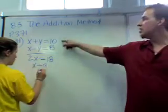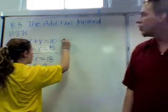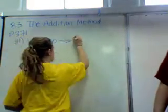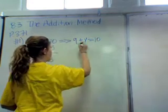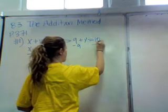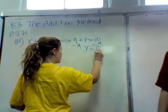Take x equals 9 and put it back in here, and we'll get 9 plus y equals 10. Subtract 9 on both sides. You'll get y equals 1, and you've got your solution because you've got your x and you've got your y. So your solution is what?